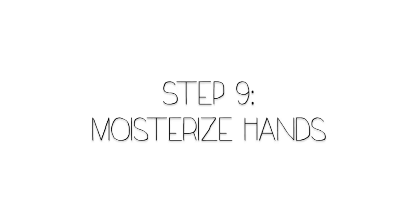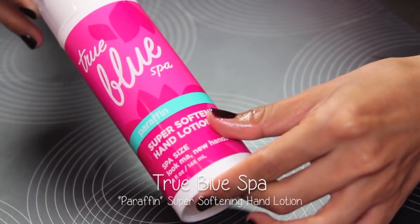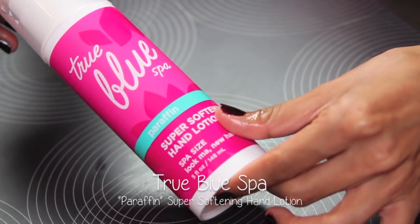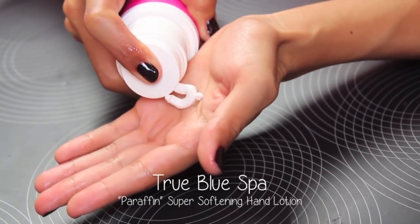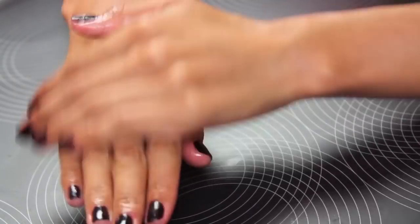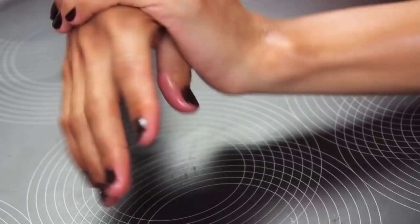Last but not least, my last step is my hand lotion. This is from the True Blue Spa Collection at Bath & Body Works, and I'm just going to moisturize my hands just to finish it off. And that's pretty much it.